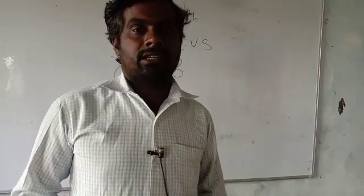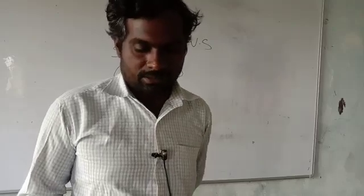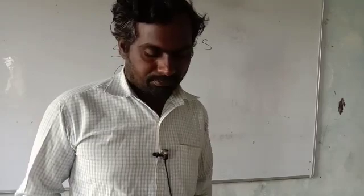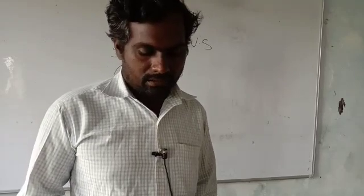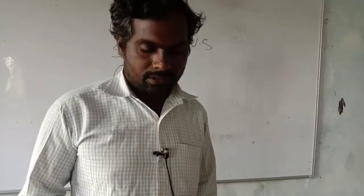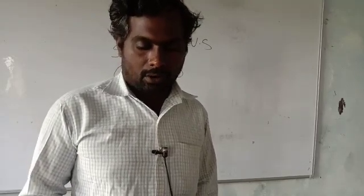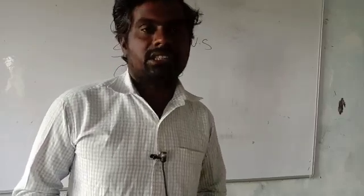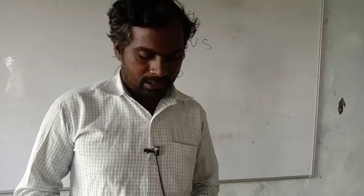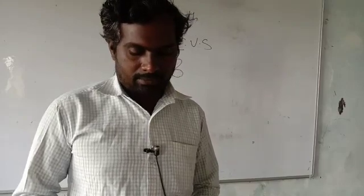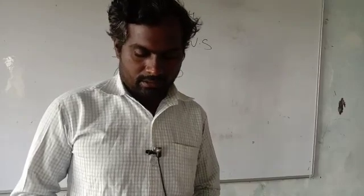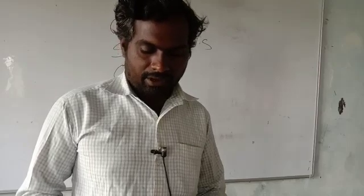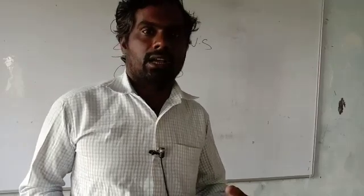Now your next heading is Nervous System. What is the nervous system? We will read about the nervous system. The brain, the nerves and the spinal cord together form the nervous system. Nervous system में तीन चीज़े आती हैं: brain, nerves and spinal cord।